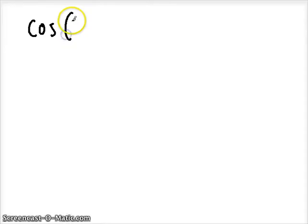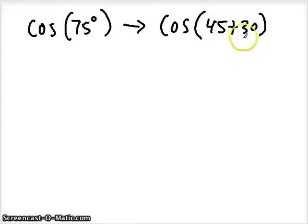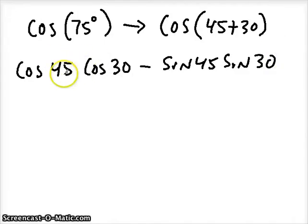How do we apply these formulas? Let's say that we have angles we can't just find the values of using our unit circle. For example, cosine of 75 degrees is not easy to look up on the unit circle, but we could use our special intervals and break this apart using a sum. I'm going to say that 75 degrees is the sum of 45 and 30. Using the cosine sum formula, I take cosine of the first angle times cosine of the second angle, minus sine of the first angle times sine of the second angle. Now we can evaluate these using our unit circle.